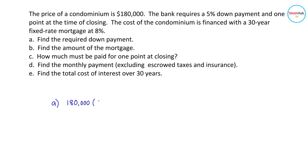That is 0.05. So 180,000 times 0.05 is equal to $9,000.